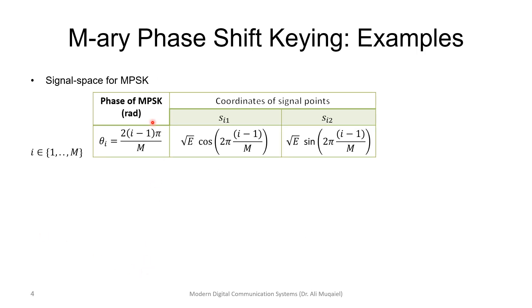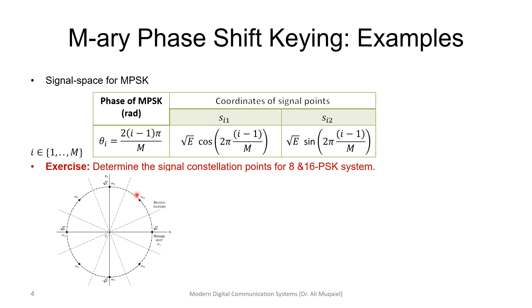We can summarize the M-ary Phase Shift Keying example with the following table, where this shows the multiple of the angle, and here we have the x and the y coordinate. So for example, if somebody asks you to sketch the 8-PSK, we can have the following diagram. It's a circle, we divide the angles, and we have eight different symbols distributed equally on a circle.